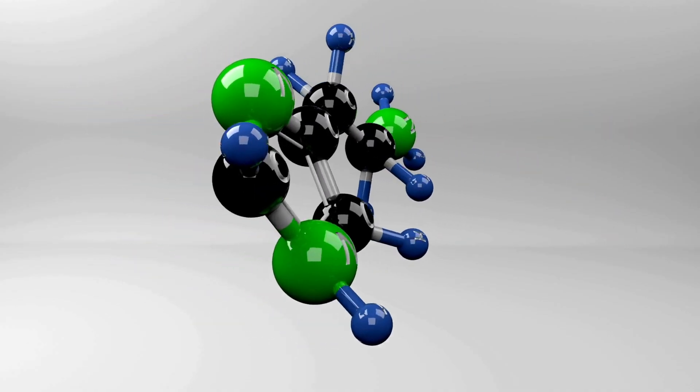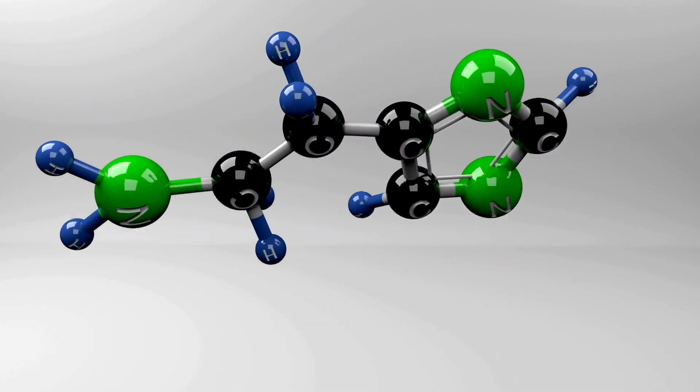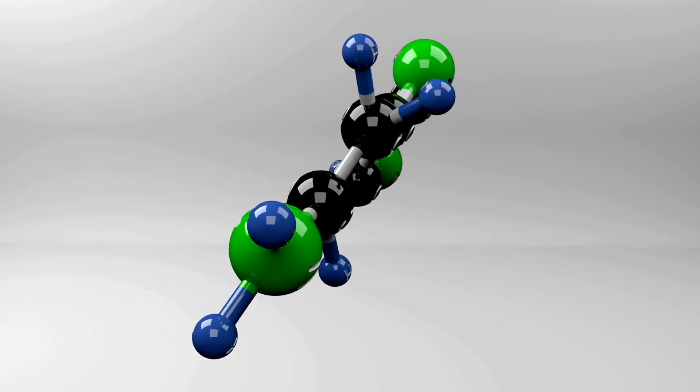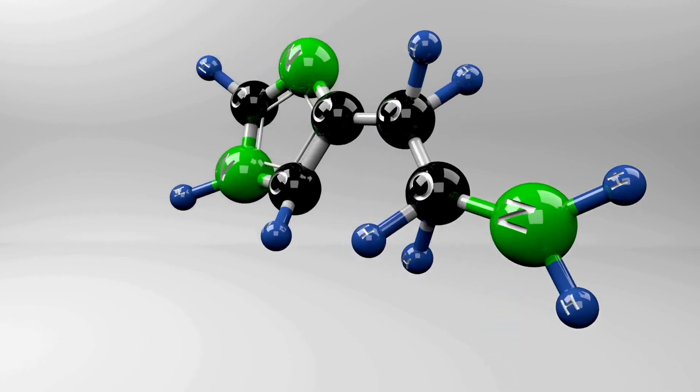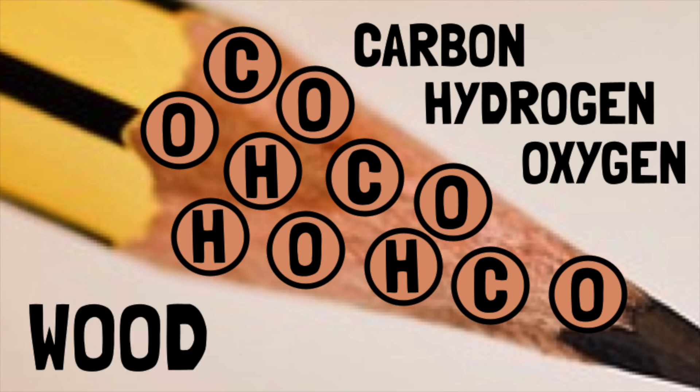Atoms of different elements join together to form all kinds of matter. Your pencil is mostly made of carbon, hydrogen, and oxygen atoms all joined together to create a material we call wood.